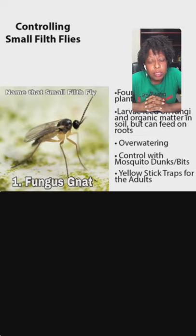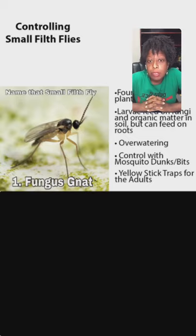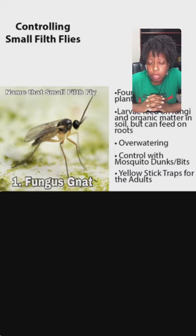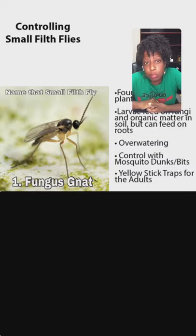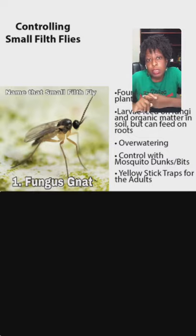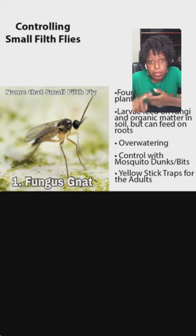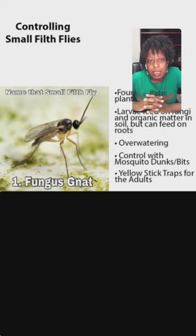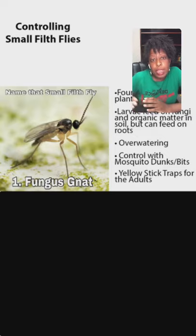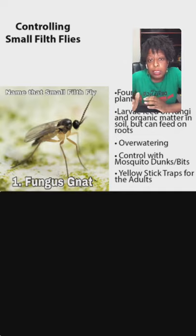You'll also want to incorporate mosquito dunks or bits. They contain a bacteria called Bacillus thuringiensis israelensis (Bti), a bacteria that specifically targets flies that utilize aquatic environments to reproduce. It'll control mosquitoes, midge flies, fungus gnats, and drain flies. You add it to the soil — it's counterintuitive but you need to water it in. There are some liquid Bti products too, though they're kind of expensive. This bacteria kills the larvae so they never reach the adult stage.